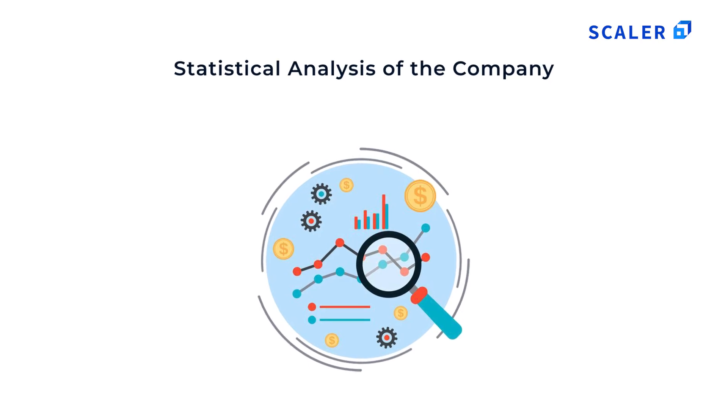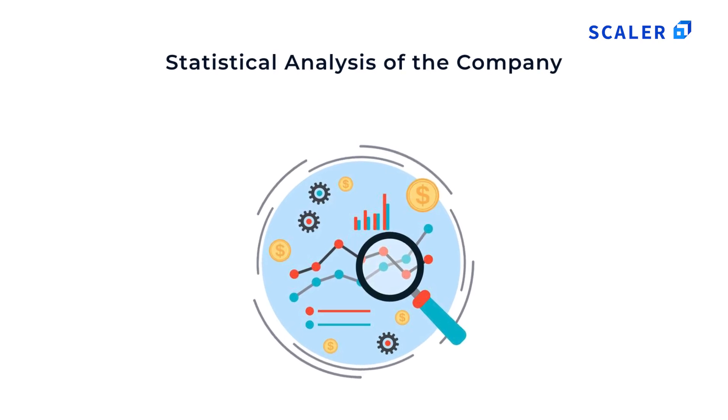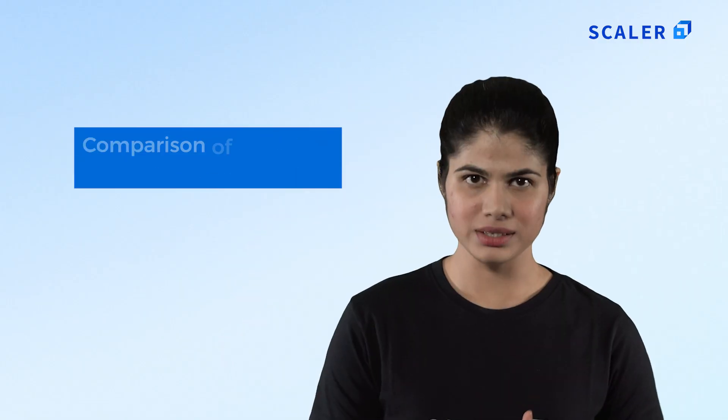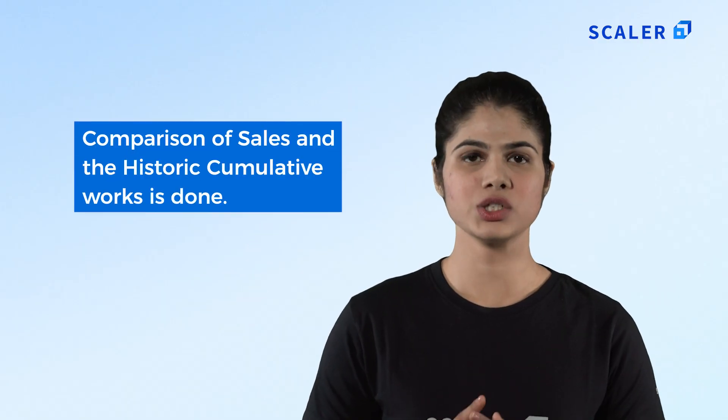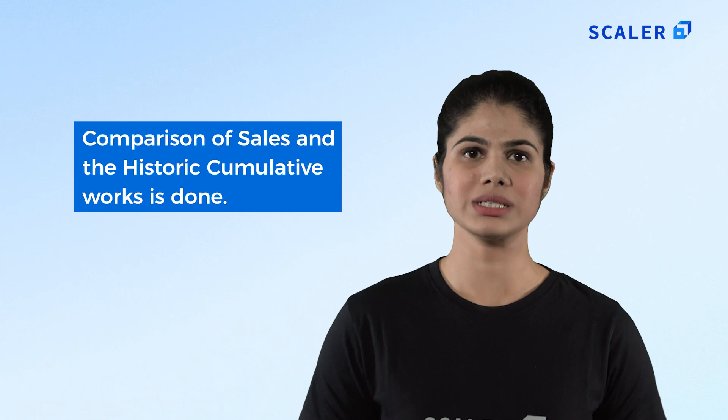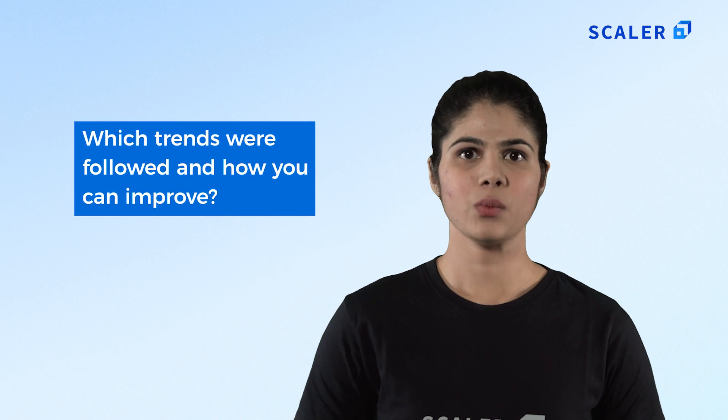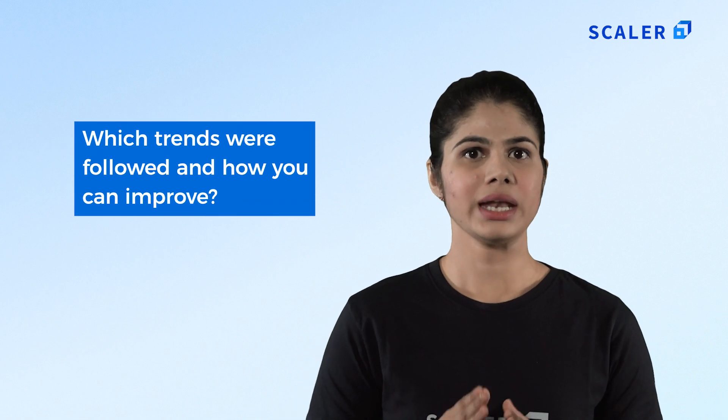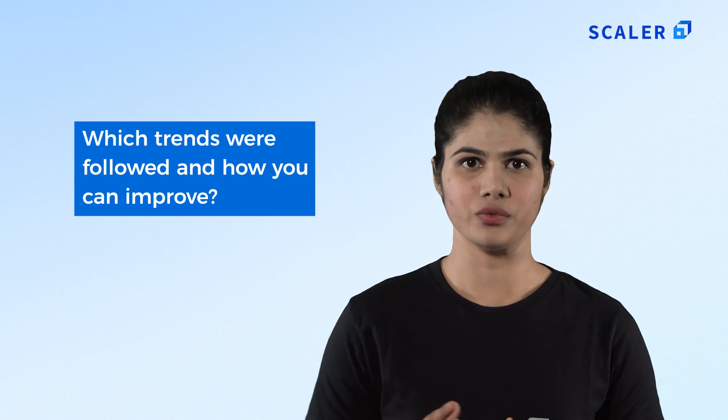Fifth, statistical analysis of the company. This is a more detailed way of going about the reports. The comparison of sales and historic cumulative works is done. It will explain the result and how you got to it, which trends were followed and how you can improve.